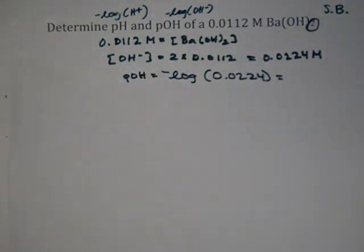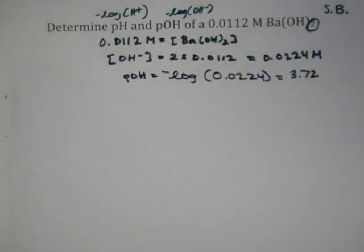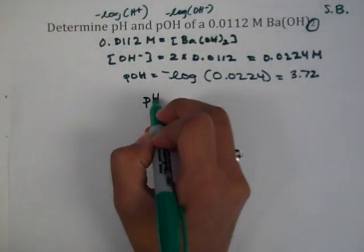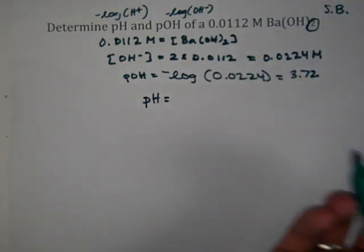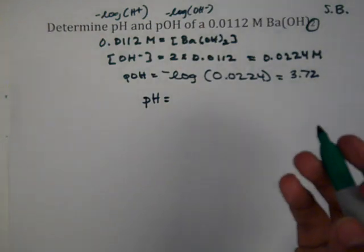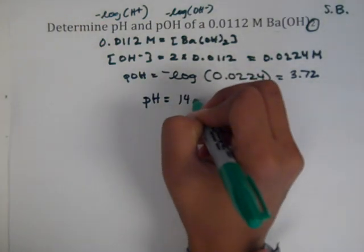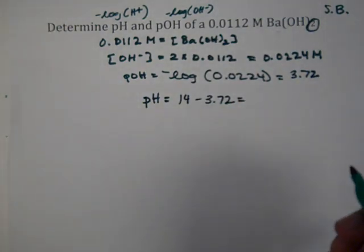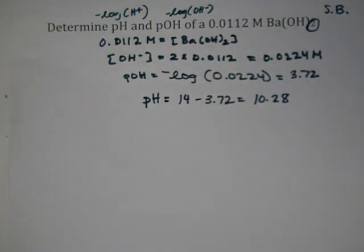We can also keep going and work it another way. If we have pOH, we can take pH, which we know is going to be 14 minus that number, because we know 14 has to equal the sum of those numbers. So pH is simply going to be 14 minus 3.72, and that gives us 10.28. That is one way to work the problem.